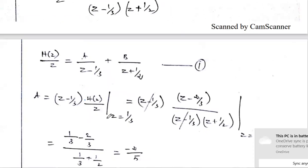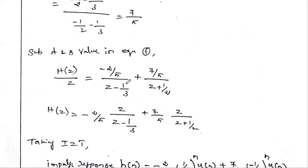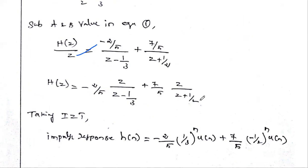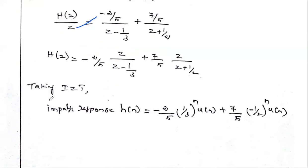H(z)/z = (−2/5)/(z − 1/3) + (7/5)/(z + 1/2). Multiplying both sides by z, H(z) = (−2/5) · z/(z − 1/3) + (7/5) · z/(z + 1/2).